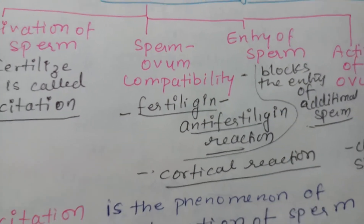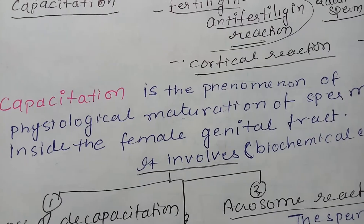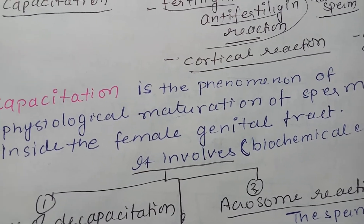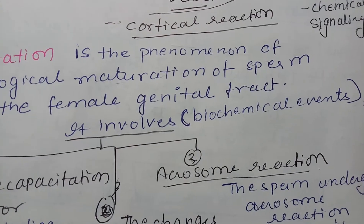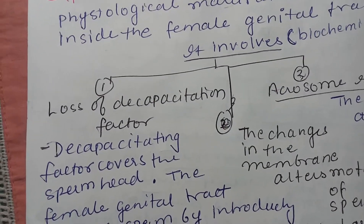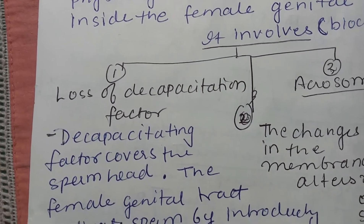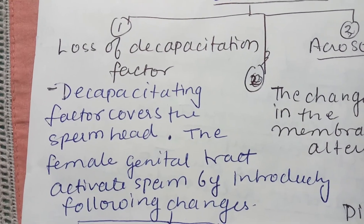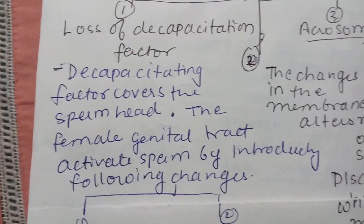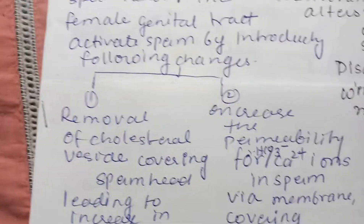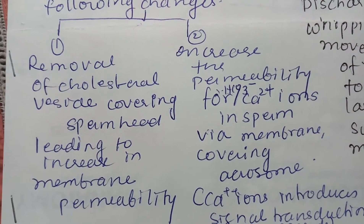This whole process is a biochemical process since many chemical reactions are involved. Capacitation is the phenomenon of physiological maturation of sperm inside the female genital tract. It involves certain biochemical events, the first being the loss of the decapacitation factor. The decapacitation factor covers the sperm head, and the female genital tract activates sperm by introducing certain changes.